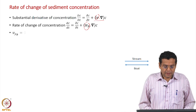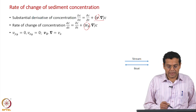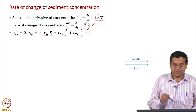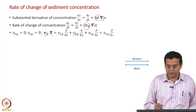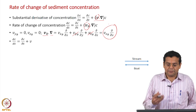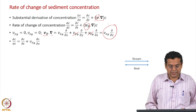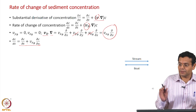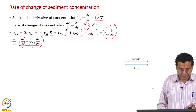We take the one-dimensional case: v_yb = 0, v_zb = 0, and v_b dot the gradient simplifies to only one term. So the expression for the rate of change of concentration — I do not call this the substantial derivative, but one of the special cases — is given by this expression. It still has two components: a local component and a convective component, but the convection takes place at different rates depending on the velocity.